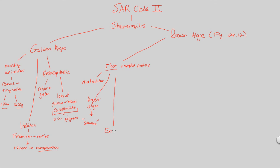A good example of the complexity within brown algae is kelp. Kelp is a direct, better way of saying seaweed. Kelp have very plant-like characteristics — not plant characteristics, but plant-like. Kelp have three main parts: they have a blade, they have a stipe, and they also have something called a holdfast. The blade represents the top of the plant — resembling what would be a leaf. The stipe is the thing holding the leaf up, like a stem. The holdfast is the foundation, like the roots.